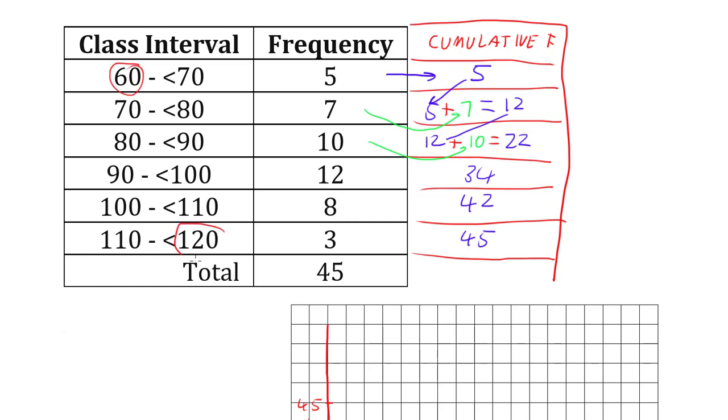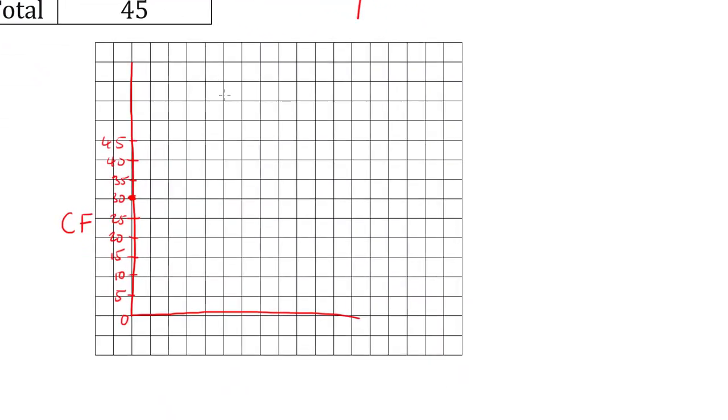and the largest possible number is 120. So we want to go up to those two numbers. So we're going to go from 60 up to 120.